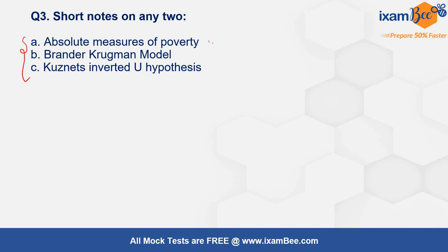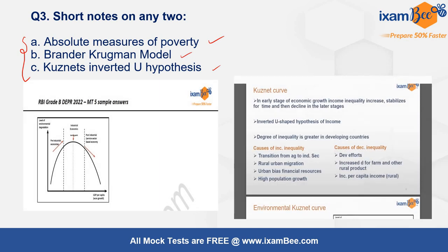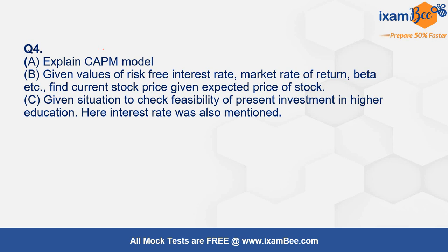The next question was a short note on any two of three given topics: absolute measures of poverty, the Brander-Krugman model, and the Kuznets inverted U hypothesis. The Kuznets inverted U hypothesis was covered in the course — it describes an inverted U-shaped graph where, in the early stages of economic growth, income inequality increases, then stabilizes for some time, and finally declines in the later stages. This phenomena needed to be explained in the short note.